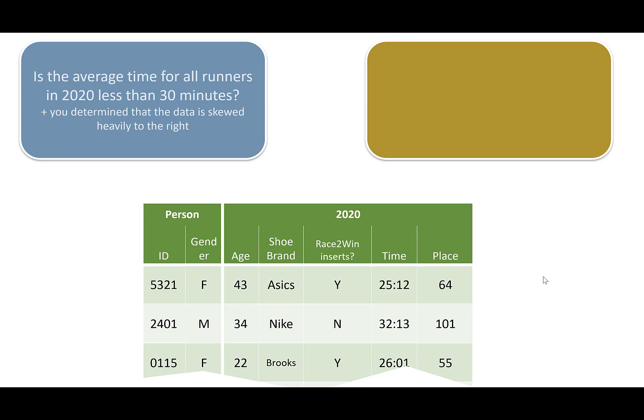Is the average time for all runners in 2020 less than 30 minutes? But now let's say the data is skewed heavily to the right. Before, we would have run a one-sample t-test. We have only a dependent variable — no independent variable splitting the data. Now the appropriate test is a Wilcoxon test, and you'd evaluate it on a one-sided basis: is it less than 30 minutes?